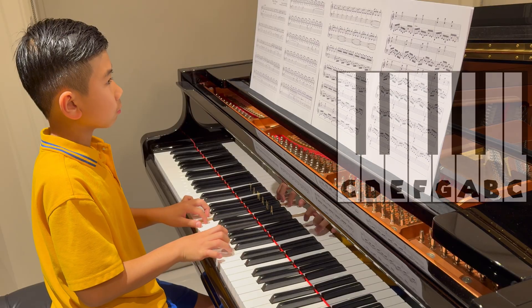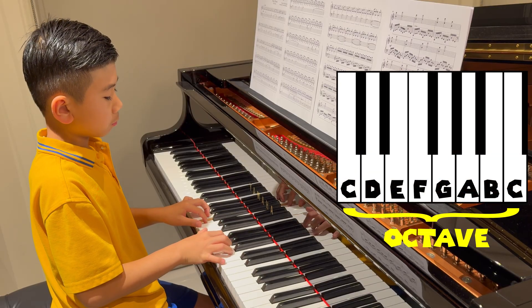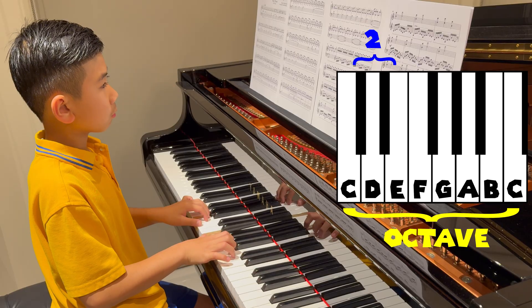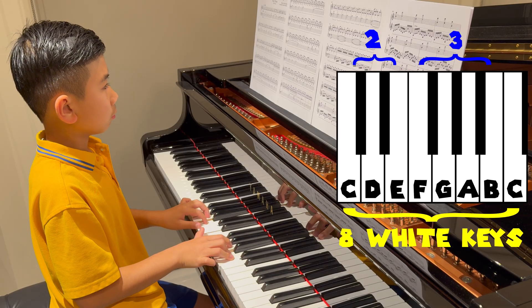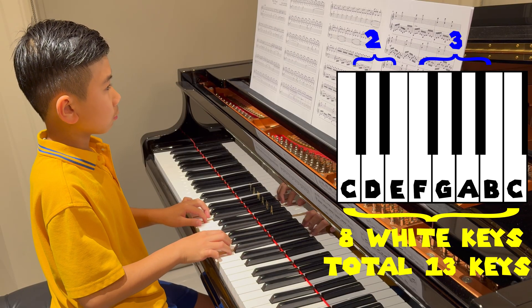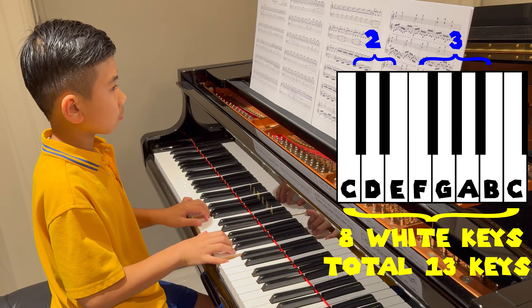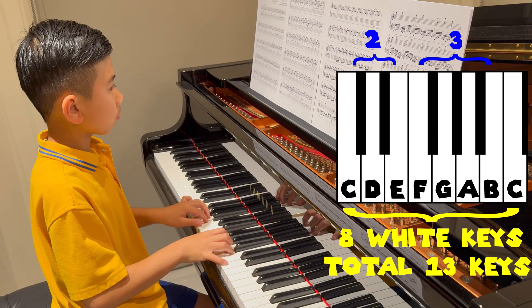If you look at the keys in a piano, in one octave there are five black keys grouped in twos and threes. There are eight white keys with a combined total of 13 keys. The number of keys is part of the Fibonacci numbers. How amazing is that?